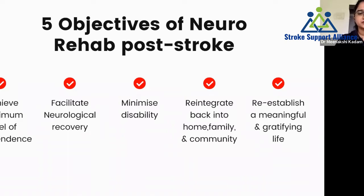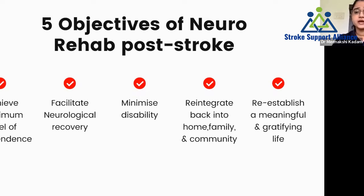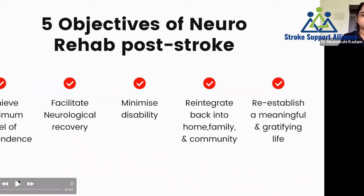Third, we want to minimize your disability — for that we'll discuss other approaches used along with traditional therapy to help achieve independent life. Fourth and very important: to reintegrate you back into the home, family, and community. After stroke, patients lose a lot of confidence to go back to the community or their original job profile — that is something we focus on. The fifth objective is to reestablish a meaningful and gratifying life which they were living before the stroke episode.